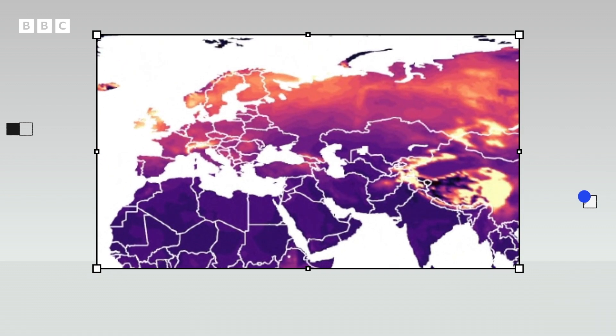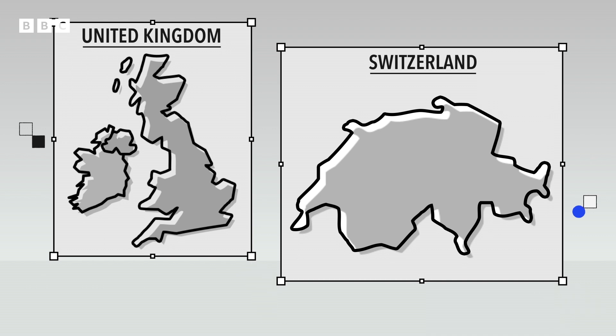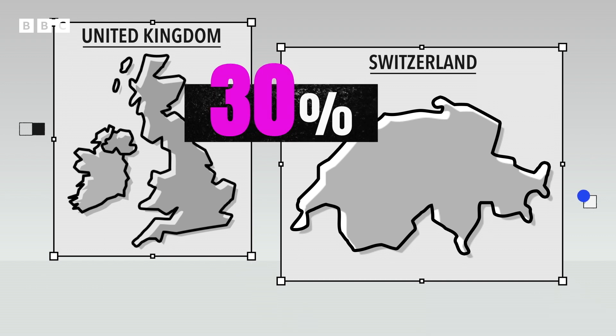But northern countries could see the biggest jump in the number of uncomfortably hot days, days when people will need additional cooling. In Switzerland and the UK, for instance, that number will go up by 30%, the biggest increase globally.